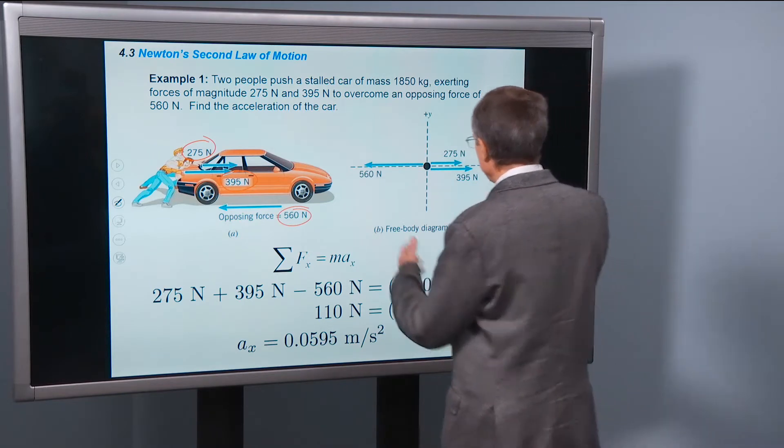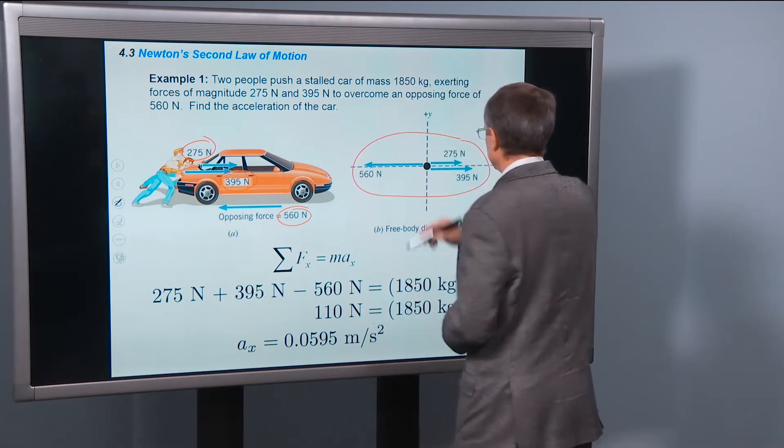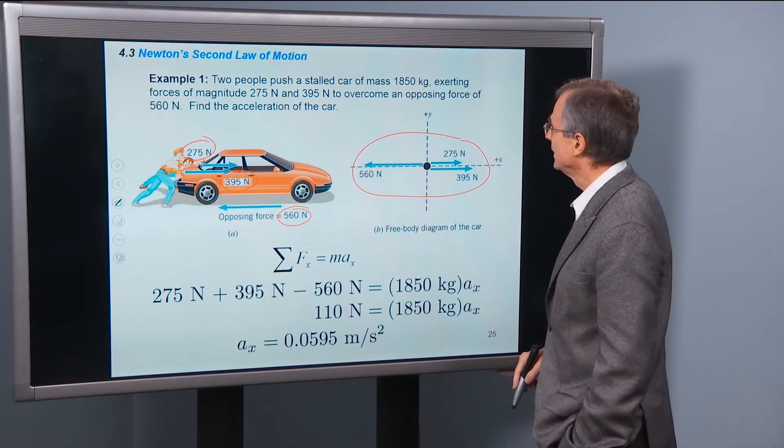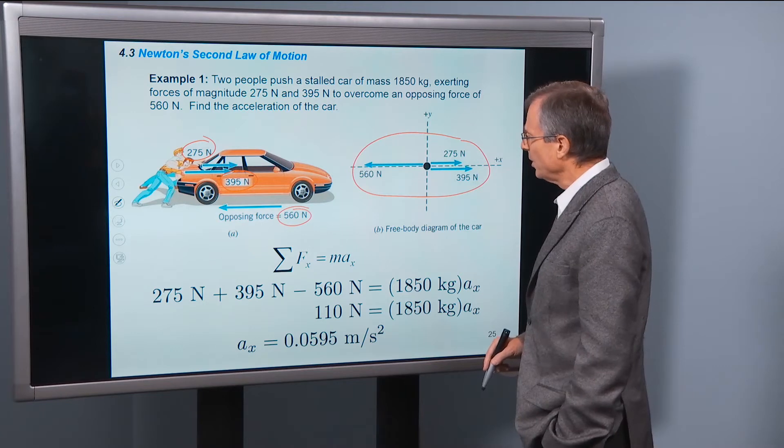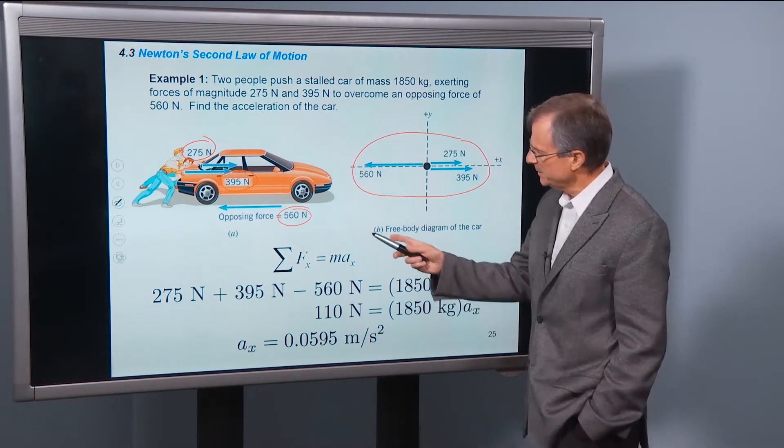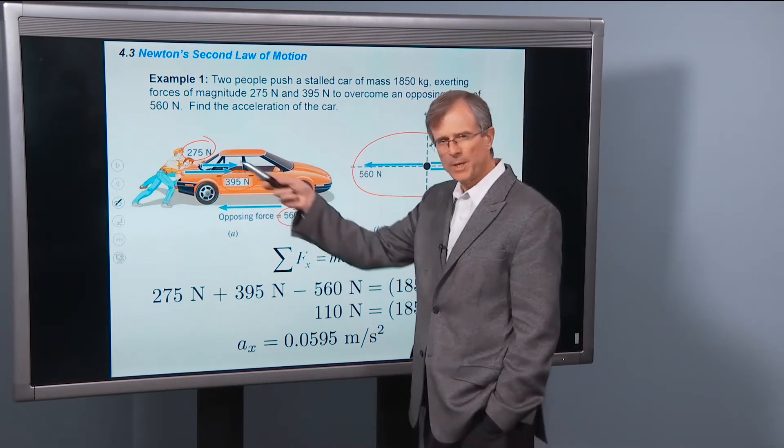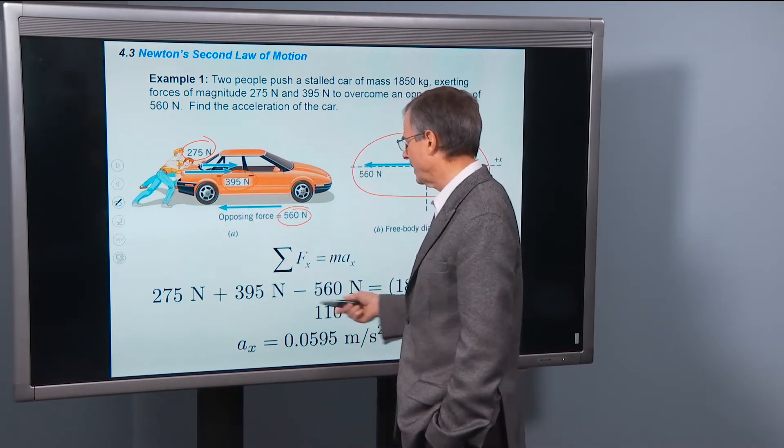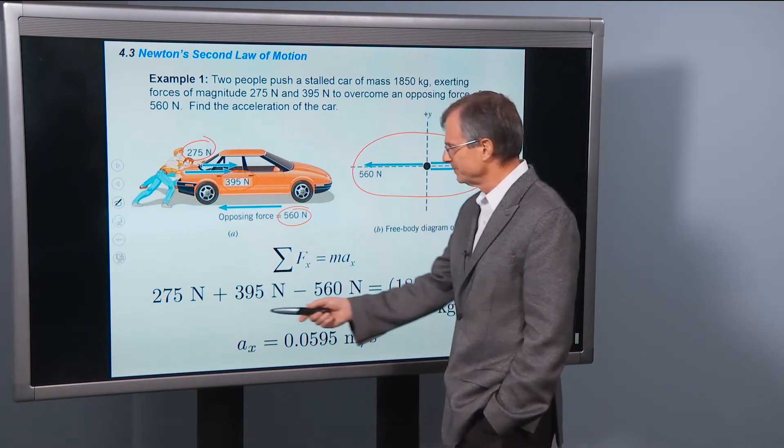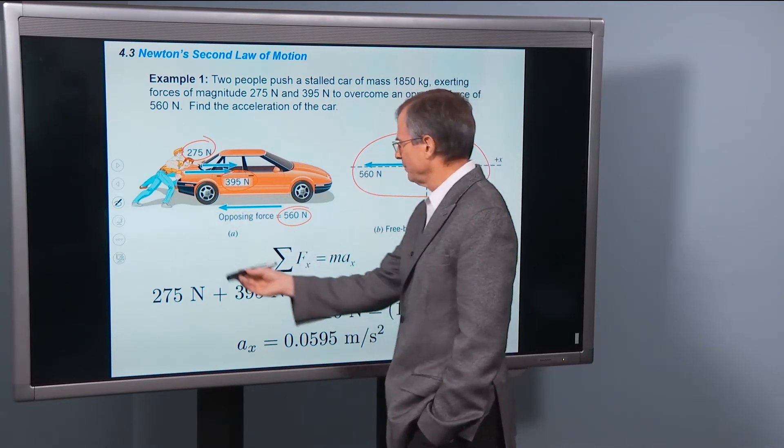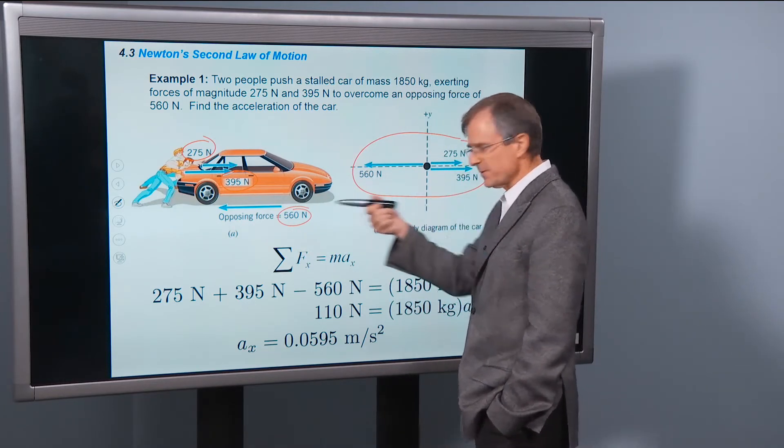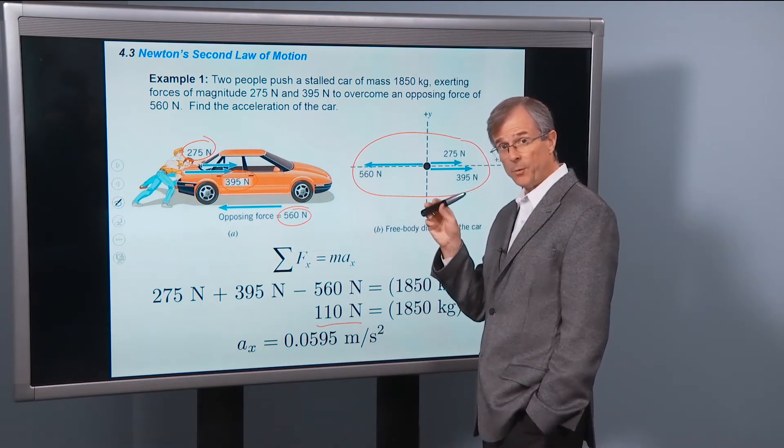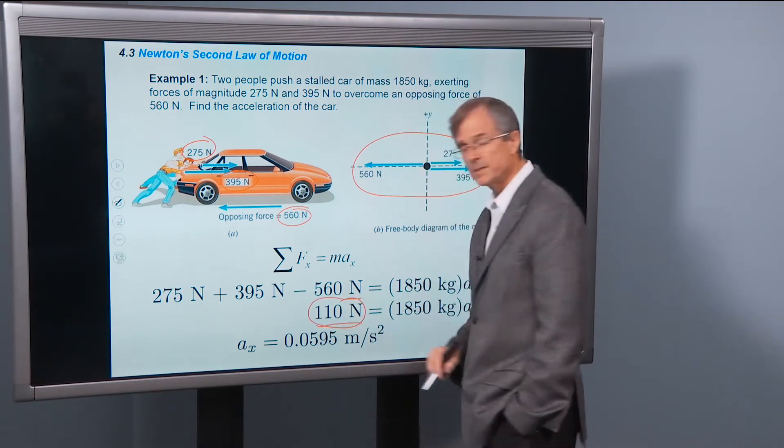Okay, forces, free body diagram. That's this. We've written the forces down here. A, the direction of the acceleration. Well, we don't know for sure whether this opposing force is going to be greater or less than the force of these two guys pushing on it. In fact, we can work it out. We did this right here. So it looks like 275 plus 395, both to the right, minus 560 to the left, gives 110 N to the right. So the net force, this is the net force, 110 N.